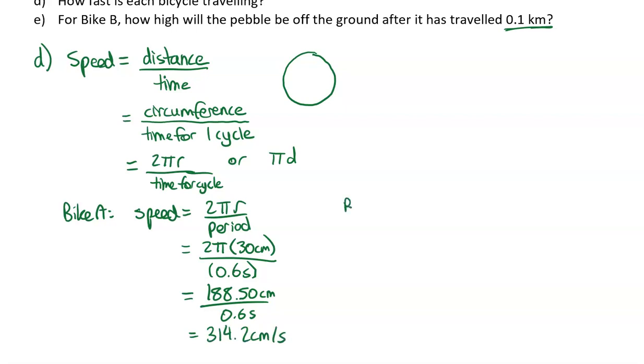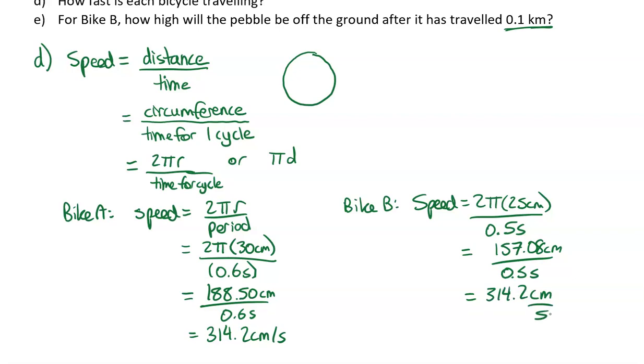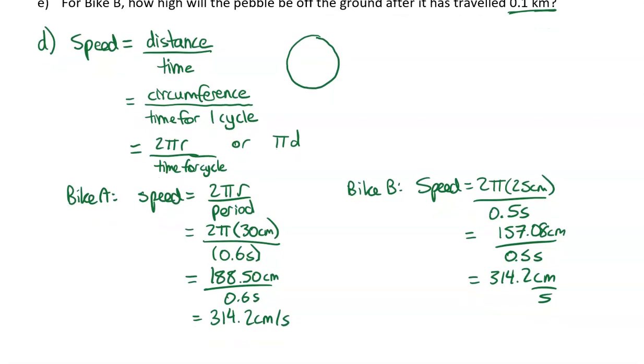For bike B, we're going to do the same thing. The speed is going to be equal to 2 times pi times 25 centimeters, and we're dividing this by 0.5 seconds. And what we get here is 157.08 centimeters divided by 0.5 seconds, which gives us 314.2 centimeters per second. Those two bikes are actually moving at the same speed. Really cool.